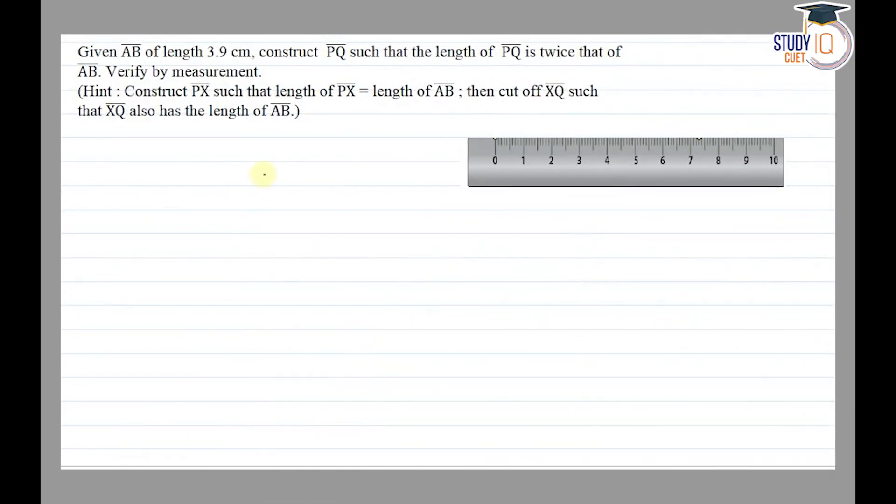Hello everyone, this question appears in Class 6 NCERT chapter of practical geometry. This is the fourth question of exercise 14.2. The question says: given AB of length 3.9 centimeter, construct PQ such that the length of PQ is twice that of AB. Verify by measurement.